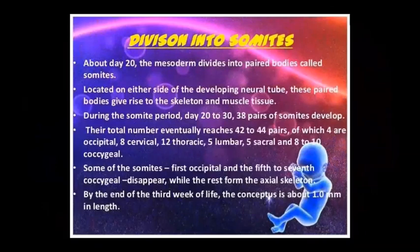These somites are associated with developing neural tubes. The paired bodies become skeletal and muscle tissue. During the somite period of 20–30 days, 38 pairs of somites develop, and their total number eventually reaches 42–44 pairs.